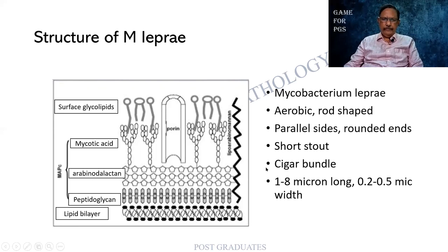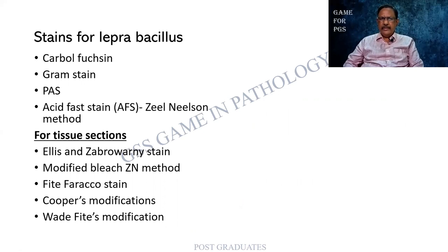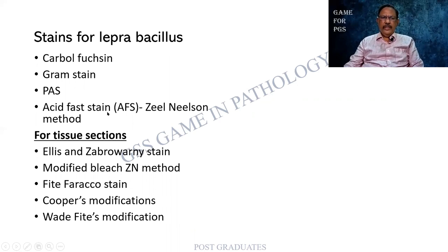Coming to the panel of stains for the lepra bacillus: carbol fuchsin by itself was used, gram stain, PAS, acid-fast stain, and the Ziehl-Neelsen classical method used for tubercle bacilli was also done for lepra bacillus. Later on, for tissue sections, a lot of changes were brought about — the modified bleaching method, the Wade-Fite-Faraco stain, Cooper's modification, and Wade-Fite's modification of their own stain. There are panels and panels of staining methods, and a lot of research has been done in lepra bacillus. Until today, we have not been able to eradicate leprosy.